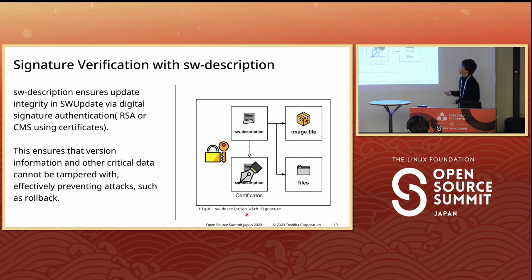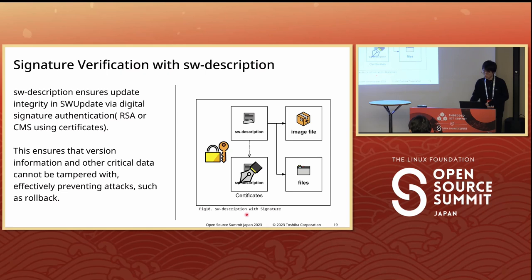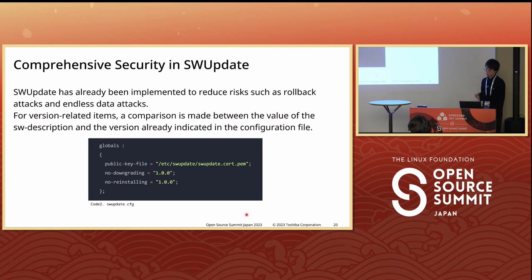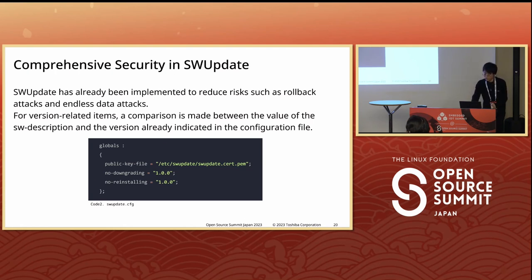SW Update has RSA and CMS support. This ensures the version information and other critical data cannot be tampered with — it protects this data. To prevent attacks such as rollback or forward attacks, SW Update has already been improved to reduce these risks. A comparison is made between the version value in the SW description and the version already indicated in the configuration file. A version check can be as straightforward as this — SW Update uses this configuration to prevent rollback and forward attacks.